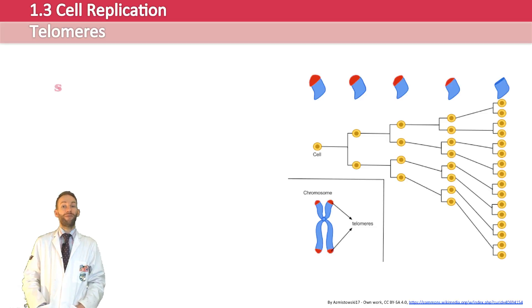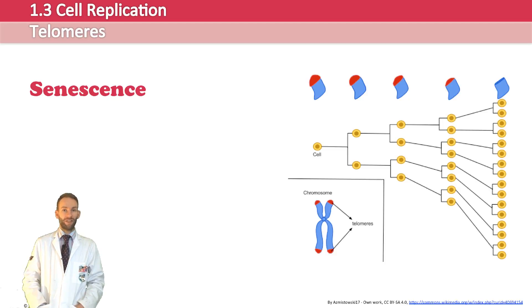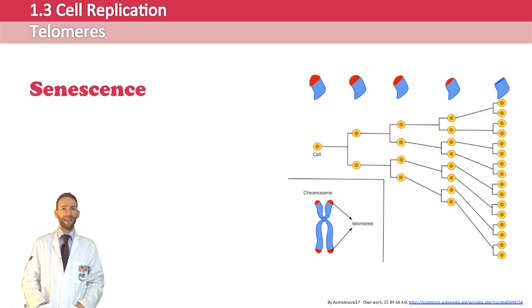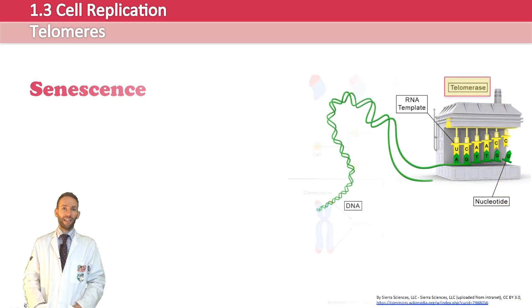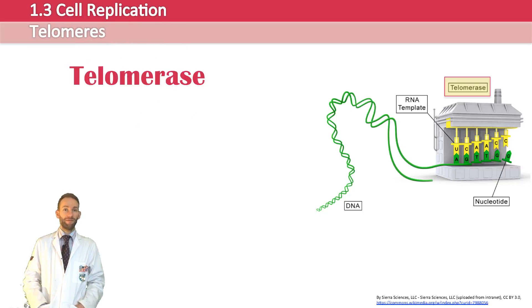This is thought to be a major contributing factor to why we age and have a certain lifespan — our cells all reach senescence once our telomeres get too short. Some stem cells are special and don't reach senescence at all, because they produce an enzyme called telomerase that builds the telomeres back up. When scientists found this out, they thought: why not give normal cells telomerase so we live forever, with cells never reaching senescence?